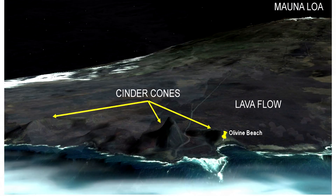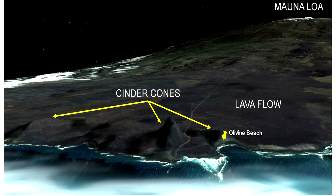This oblique view shows the recessed beach area and other cinder cones in the area, with Mauna Loa in the background.